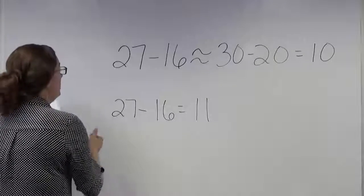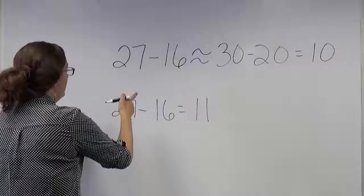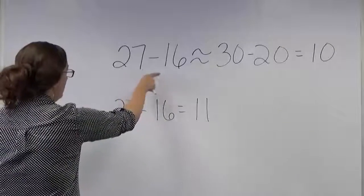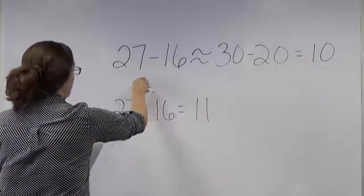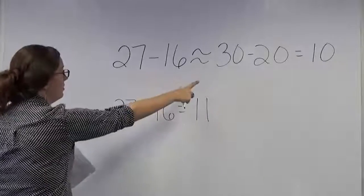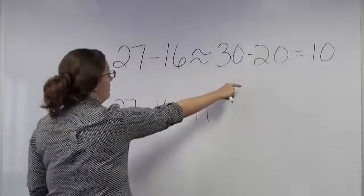For example, let's look at 27 minus 16. We would round each of these numbers to the nearest tens place. 27 would round to 30 and 16 would round up to 20.